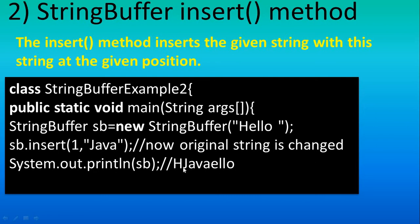Here, position 1 means after the 0th position. As usual you get 'h' because it is at the 0th position, then from position 1 onwards you get 'Java', and after that the rest of the characters — 'llo' — are printed.